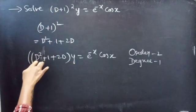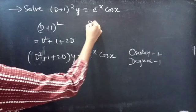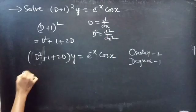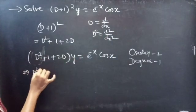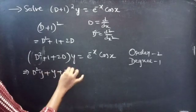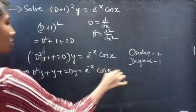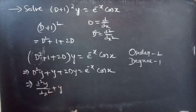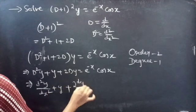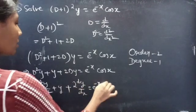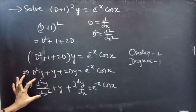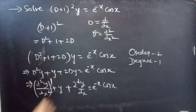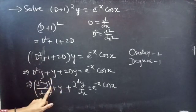We know that D is a differential operator, so D² is d²/dx². Writing the equation explicitly: d²y/dx² + 2(dy/dx) + y = e^(−x) cos x. Here d²/dx² is the highest derivative, so the order is 2 and the degree is 1.